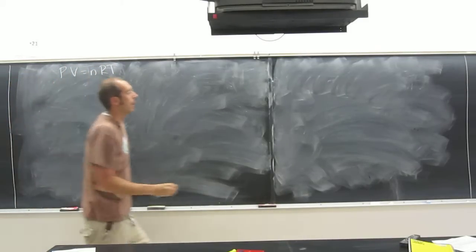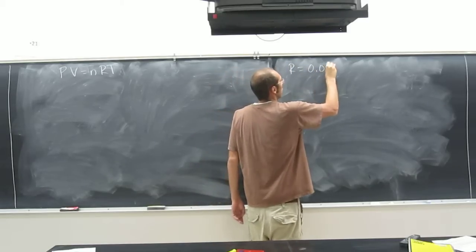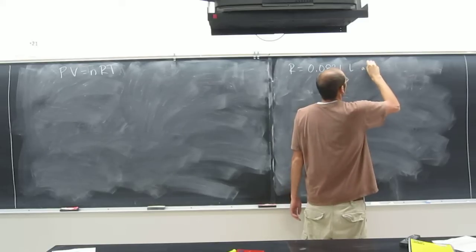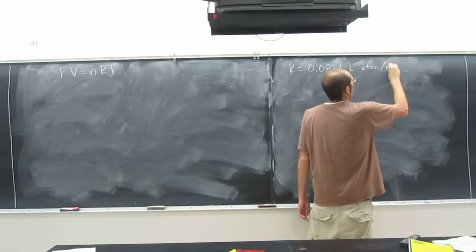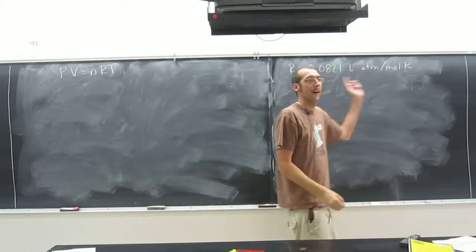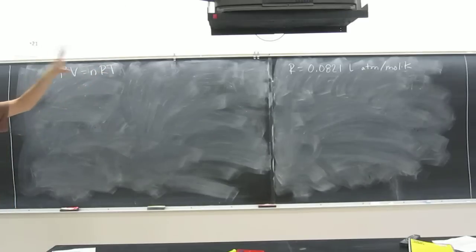So remember, R is going to be given to you. I'll give it to you right now. 0.0821 liters atm per mole kelvin. But we don't like to write it that way when we're writing it in a problem. So I'll let you try to write it on your own this time.